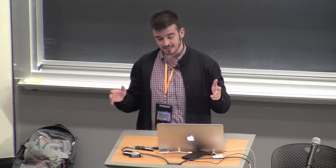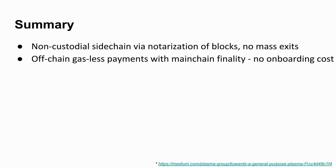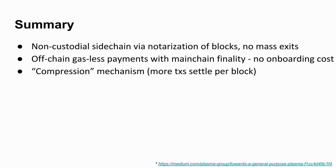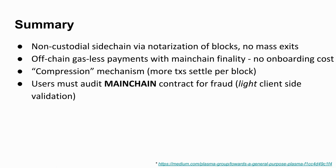You have off-chain gasless payments. Your finality is equal to the parent chain — your transaction finality is equal to whenever the operator commits blocks. So if you commit blocks every 15 seconds, your transactions still settle every 15 seconds but cost no gas. You also do not have any onboarding costs, so you do not need to open a channel like in payment channels. The easiest way to think about it is a compression mechanism — you just settle more transactions per block. The main advantage is you must audit only the main chain contract, so there is light client-side validation with no need to have the full state of the chain available. You just care about the UTXOs that only you own.